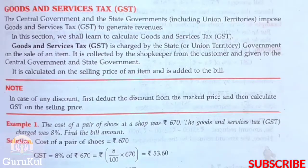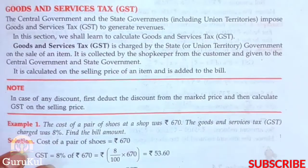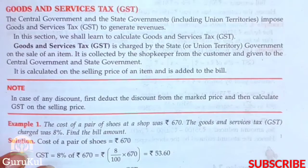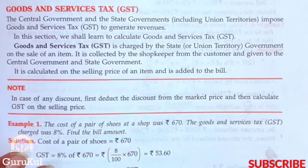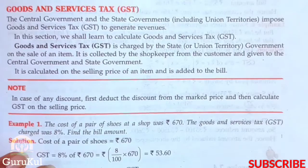GST is imposed by the central government as well as the state government. Goods and Services Tax is charged by the state or union territory government on the sale of an item. It is collected by the shopkeeper from the customer and then given to the central as well as the state government.